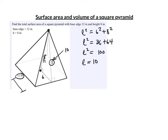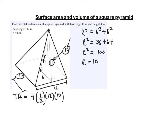Now we can find the surface area. The total area is four triangular faces: each triangle is one-half times its base (12) times its height (the slant height, 10). Plus the square base with sides of 12: 12 × 12. Calculating: the four triangles give 240, and the base gives 144, so the total surface area is 384 inches squared.